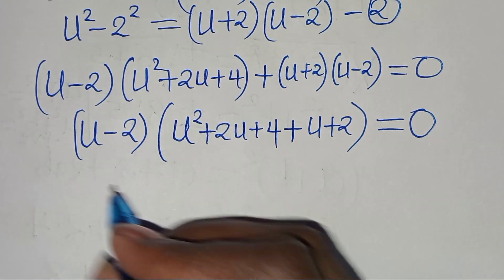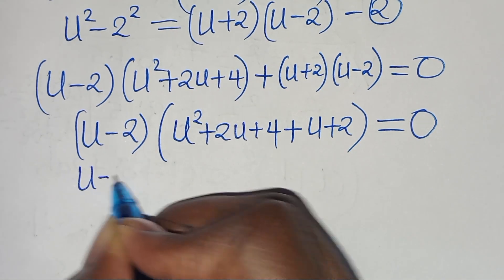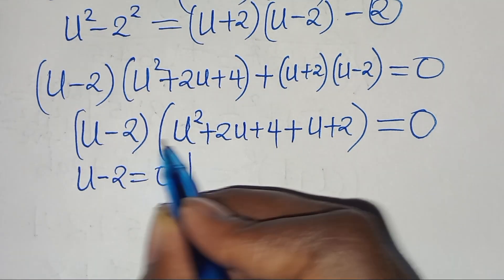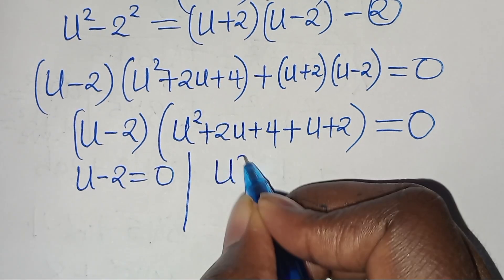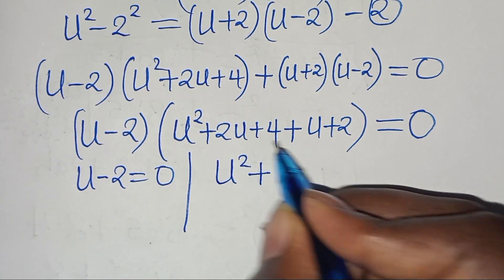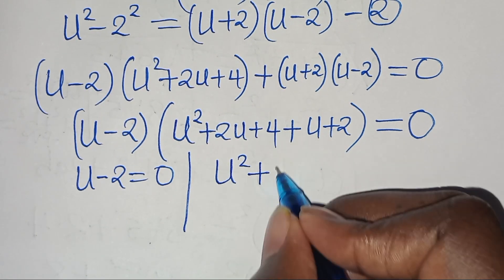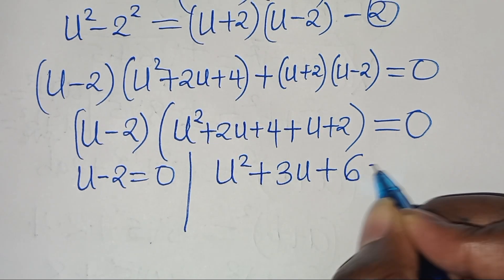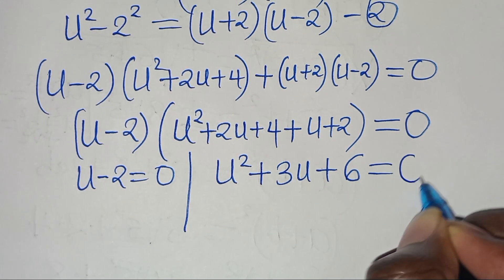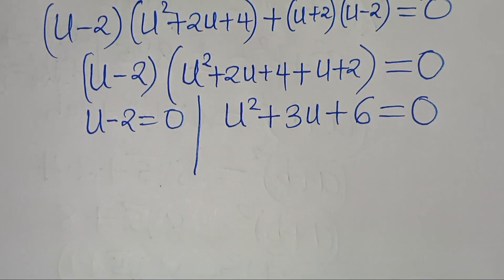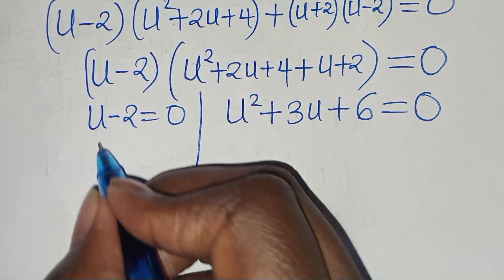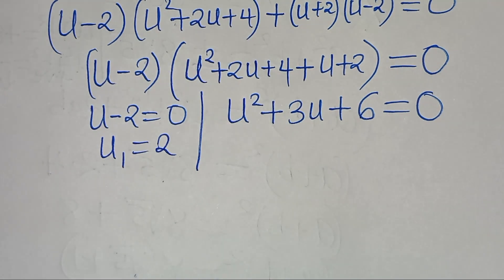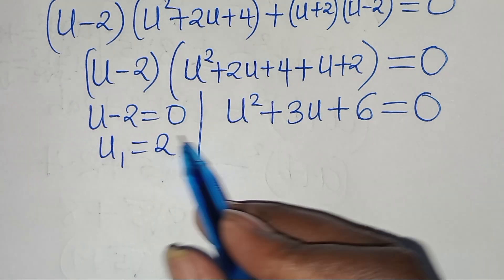We have two parts here. The first part is u minus 2, this is equal to 0. The second part is u to the power of 2 plus 2u plus u, this is 3u, plus 4 plus 2, this is 6, so u squared plus 3u plus 6 equals 0. This implies that u1 is equal to 2.